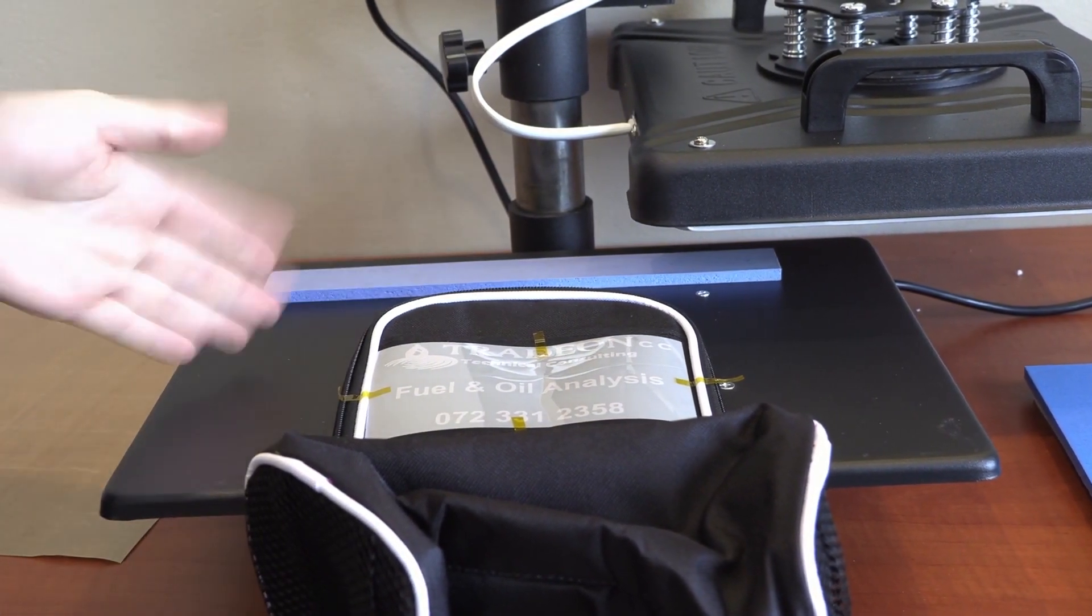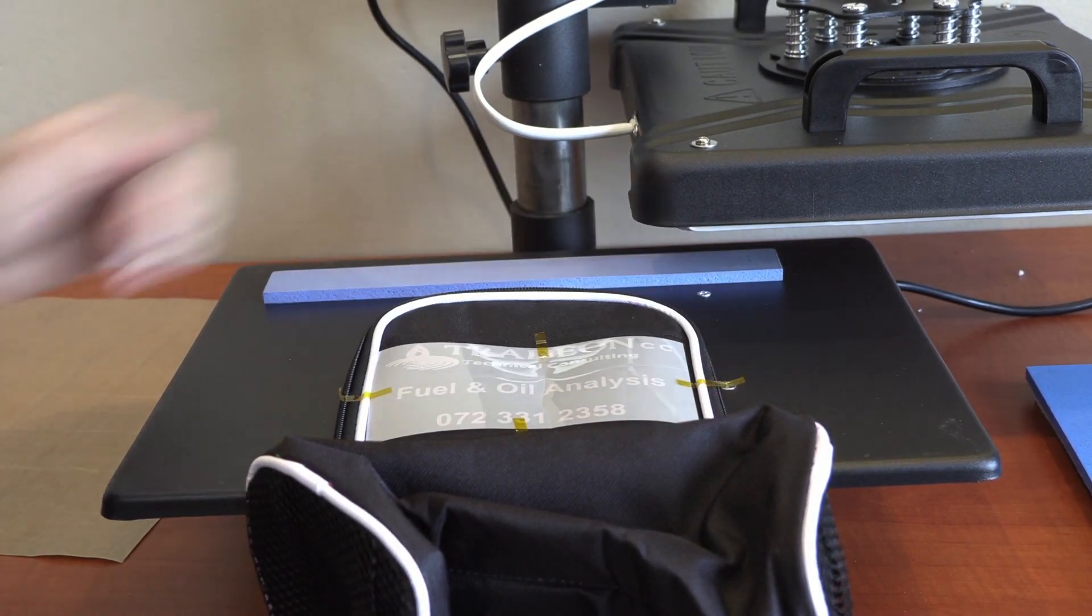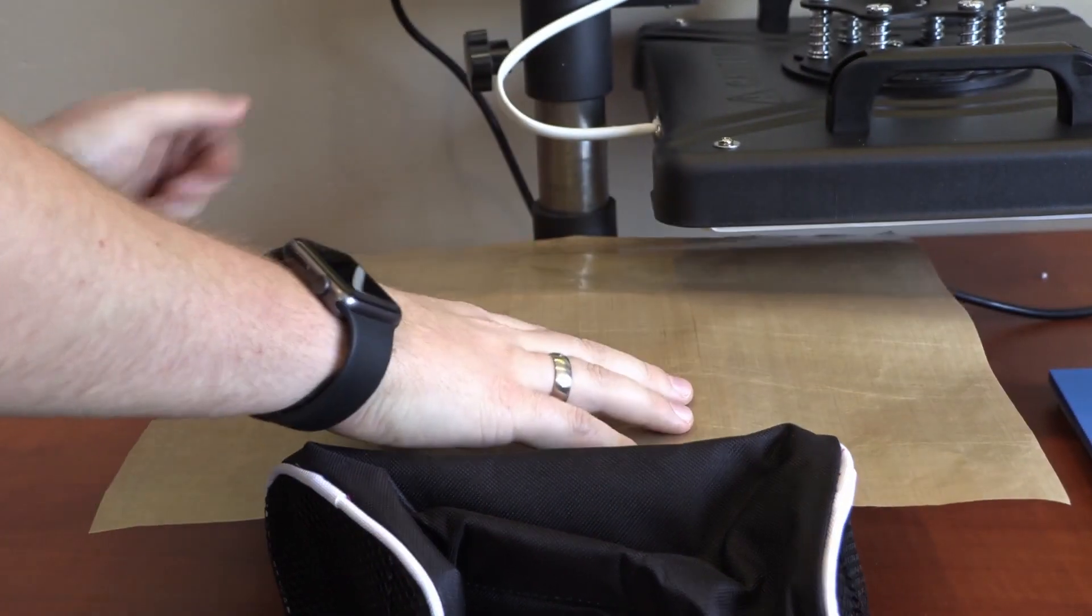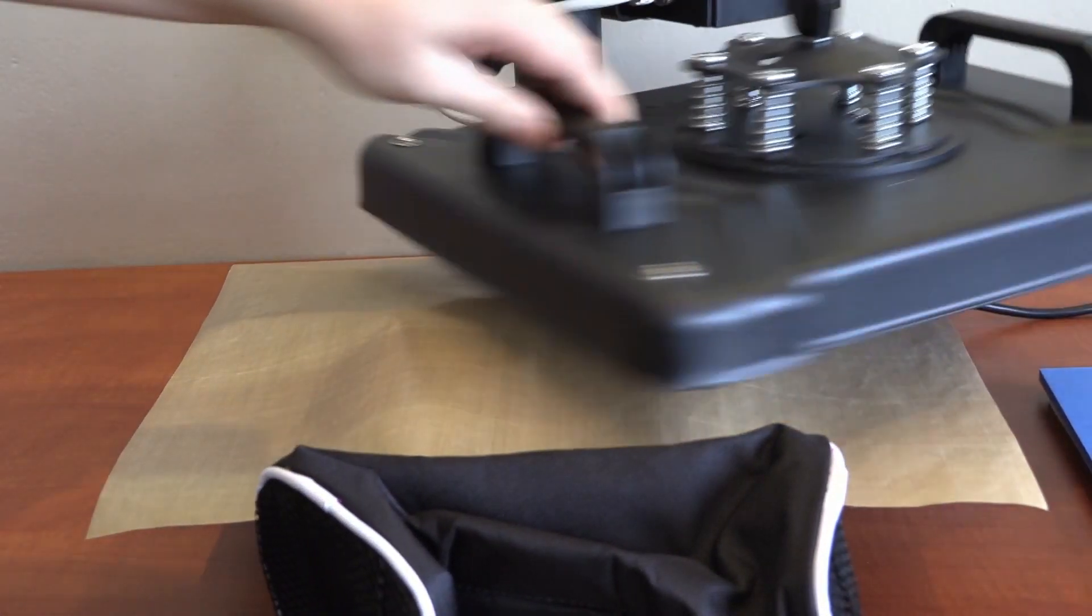Place the Teflon over it and you're now ready to adjust the pressure and start the press procedure.